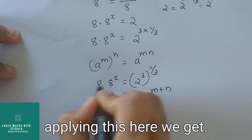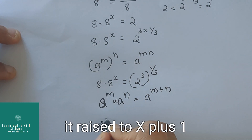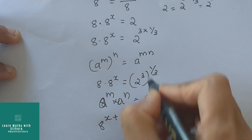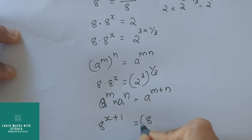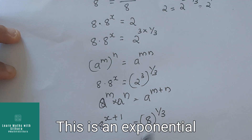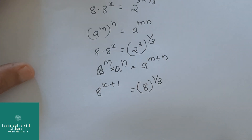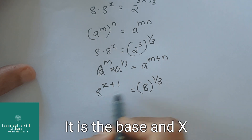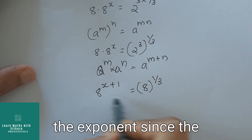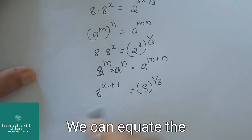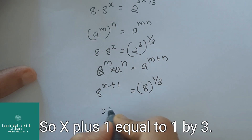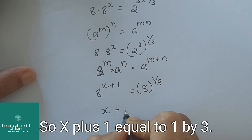Applying this here, we get 8 raised to x plus 1 equal to 2 raised to 3, which is 8, raised to 1 by 3. This is an exponential equation where 8 is the base, and x plus 1 and 1 by 3 are the exponents. Since the base is equal, we can equate the exponents, so x plus 1 equal to 1 by 3.